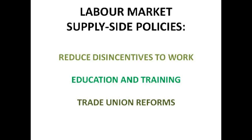Decreasing social security benefits means that those on benefits have a reduced income. Therefore, voluntarily unemployed people are more likely to look for employment, particularly in a positive output gap when there are lots of employment opportunities available. It reduces the risk of the unemployment trap, which is when benefits are greater than the income they'd receive if they worked.